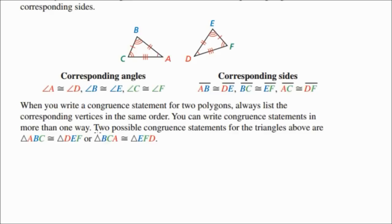If you mix the order to say something like triangle BCA, then you have to switch the order on the second triangle as well — so triangle BCA would be congruent to triangle EFD. Notice that the tick marks and arc marks have to match. Angle A has one arc that corresponds to angle D, which also has one arc.